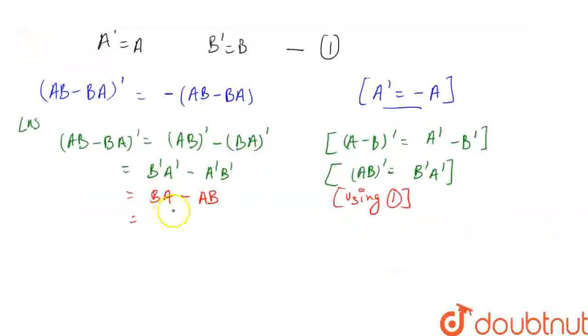If you take minus sign common, this becomes AB minus BA. This is what we need to prove. This equals right-hand side. That is RHS. Hence, proved.